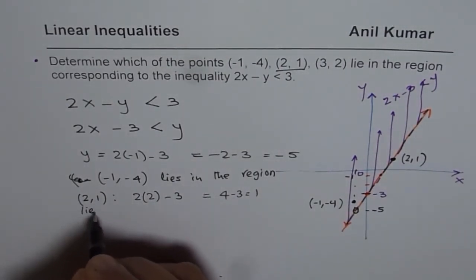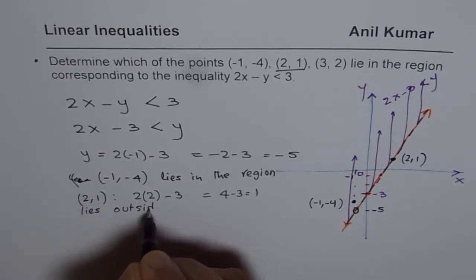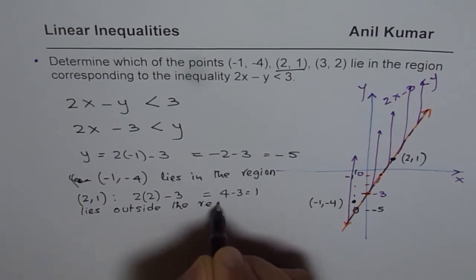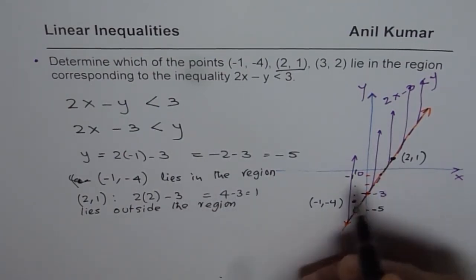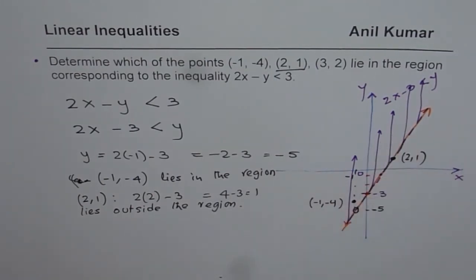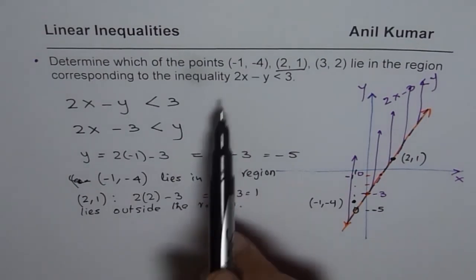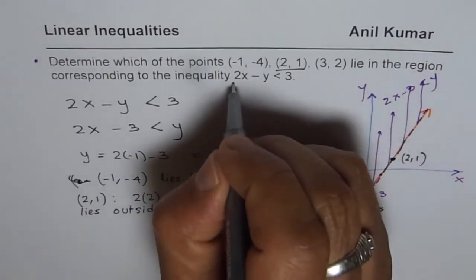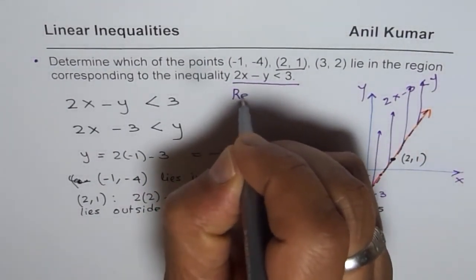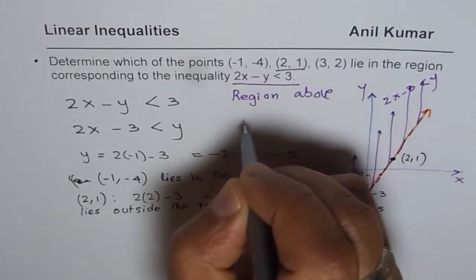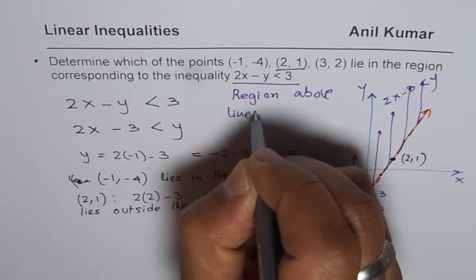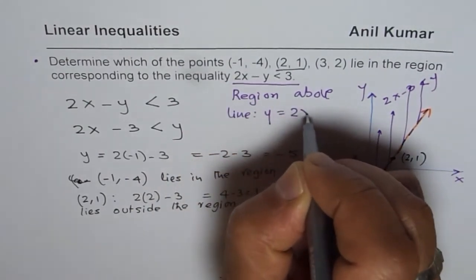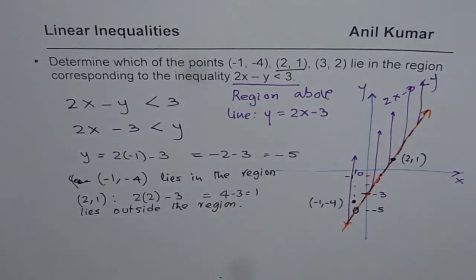(2, 1) lies outside the region. Since it is on the line, do you see that? It is not inside this shaded region. Line is not included in this inequality. What we found was, this inequality means region above line y = 2x - 3. That is what this inequality is. Above because that is greater than. So this point does not lie in the given region.